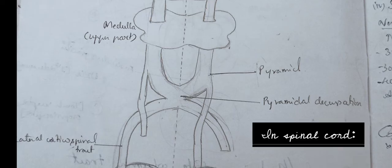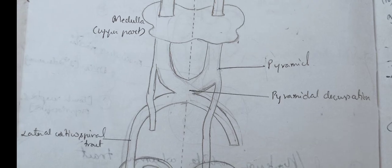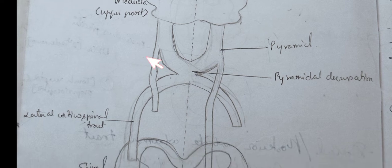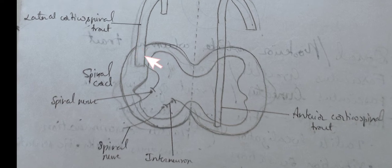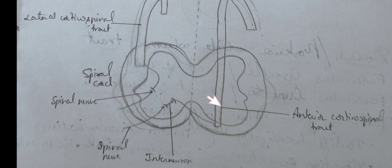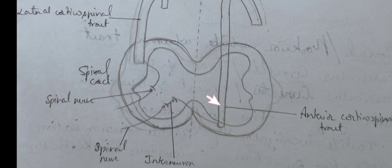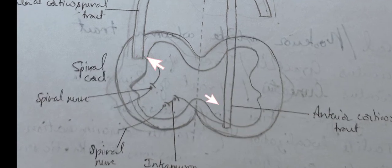At the spinal cord, the crossed fibers terminate at the lateral white column, hence called lateral corticospinal tract, also known as crossed pyramidal tract or indirect pyramidal tract. While the uncrossed fibers end at the anterior column, hence known as anterior corticospinal tract, also called direct pyramidal tract or uncrossed pyramidal tract.